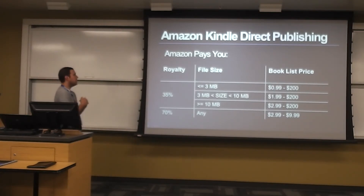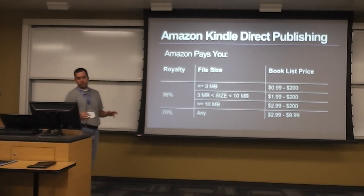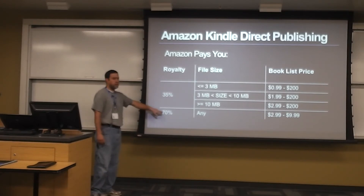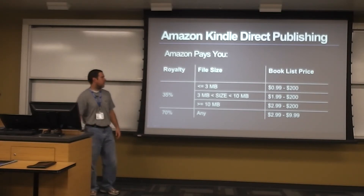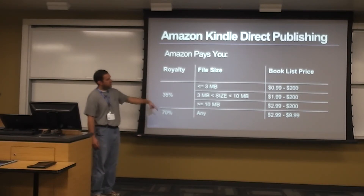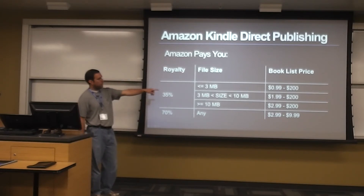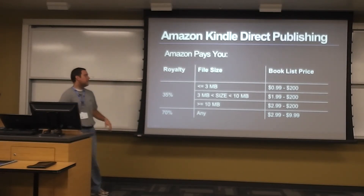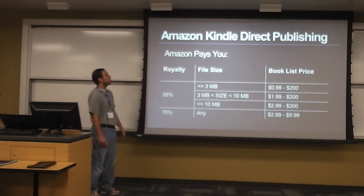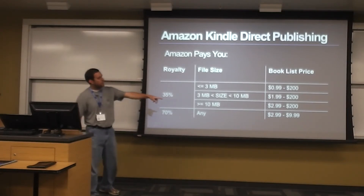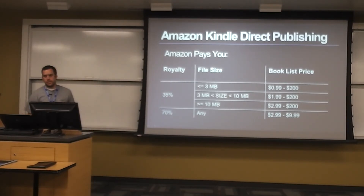Amazon has a really interesting pricing structure trying to lead you toward selling your book between $3 and $10. If you sell in that range, you get 70% — they take a 30% cut. If you want to sell for more than $10, the range goes from a minimum of $1 up to a maximum of $200, and they take 65% and pay you 35%. It seems like they really want books in that lower bucket because they're more interested in selling Kindles than ebooks.